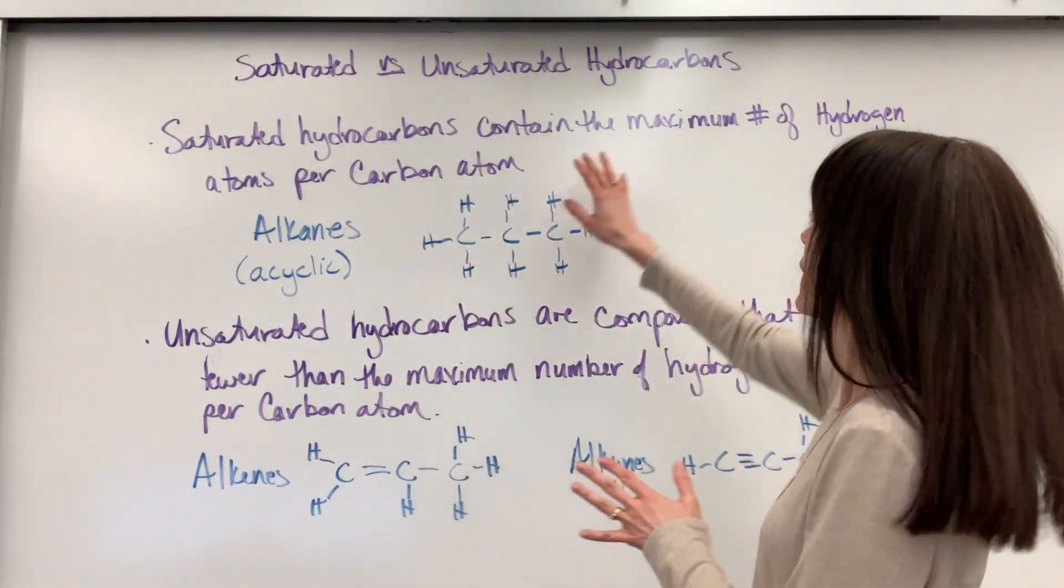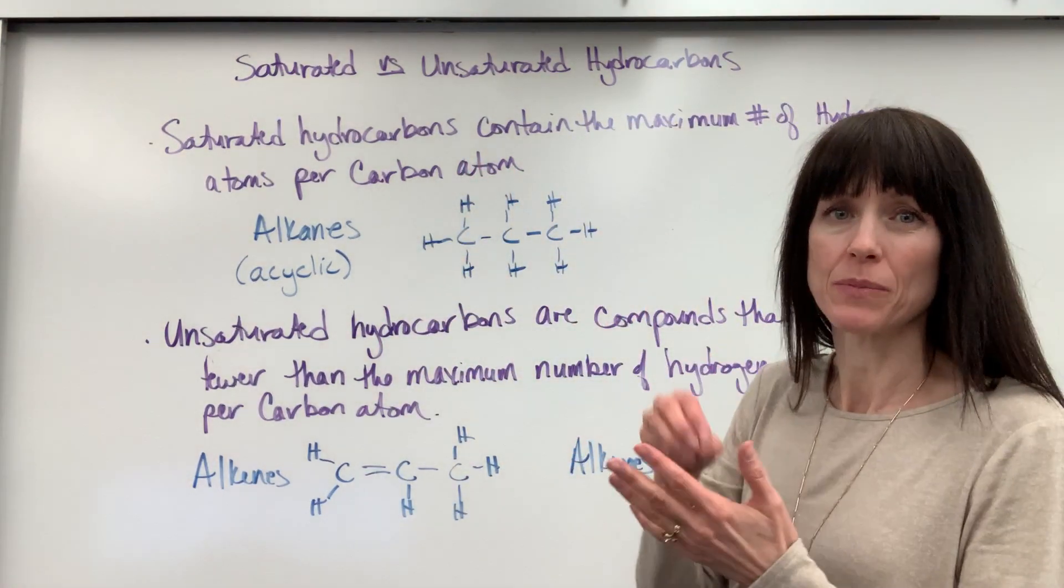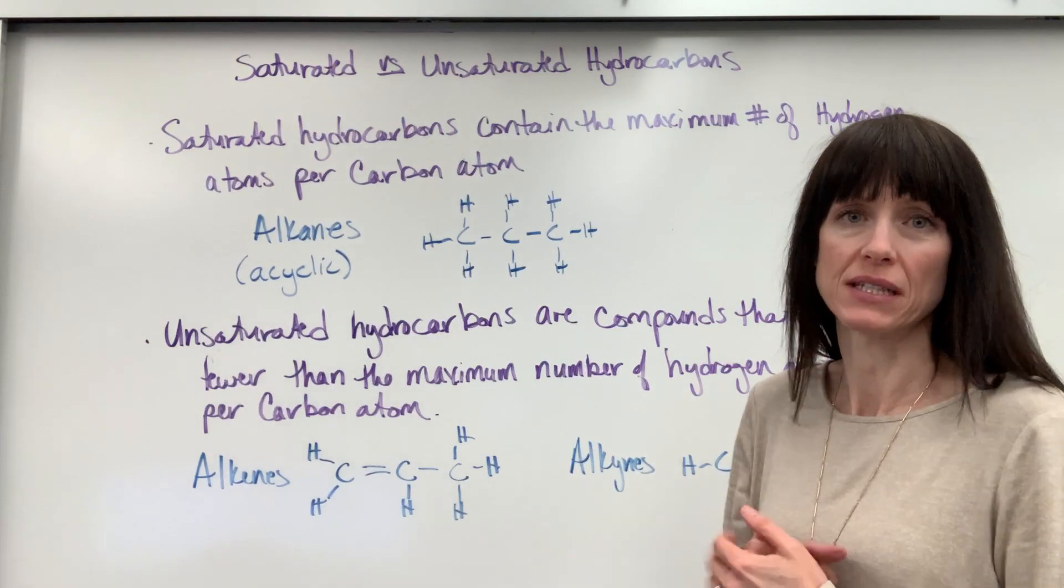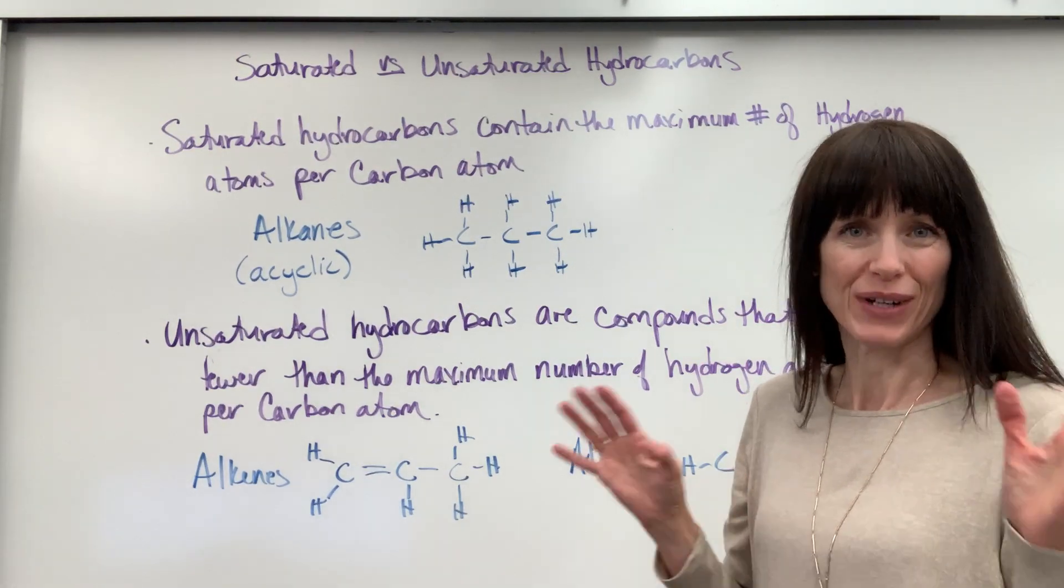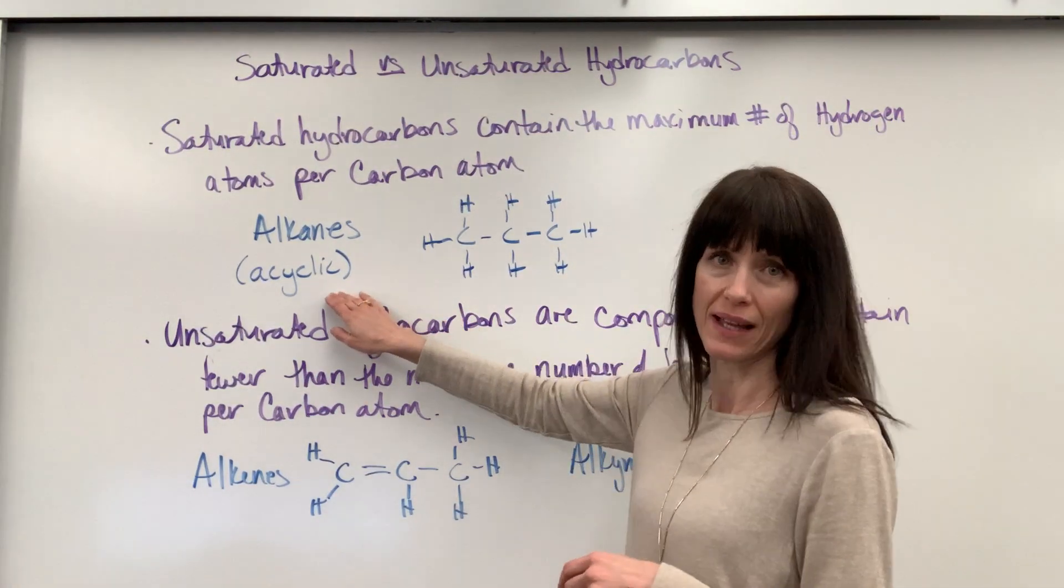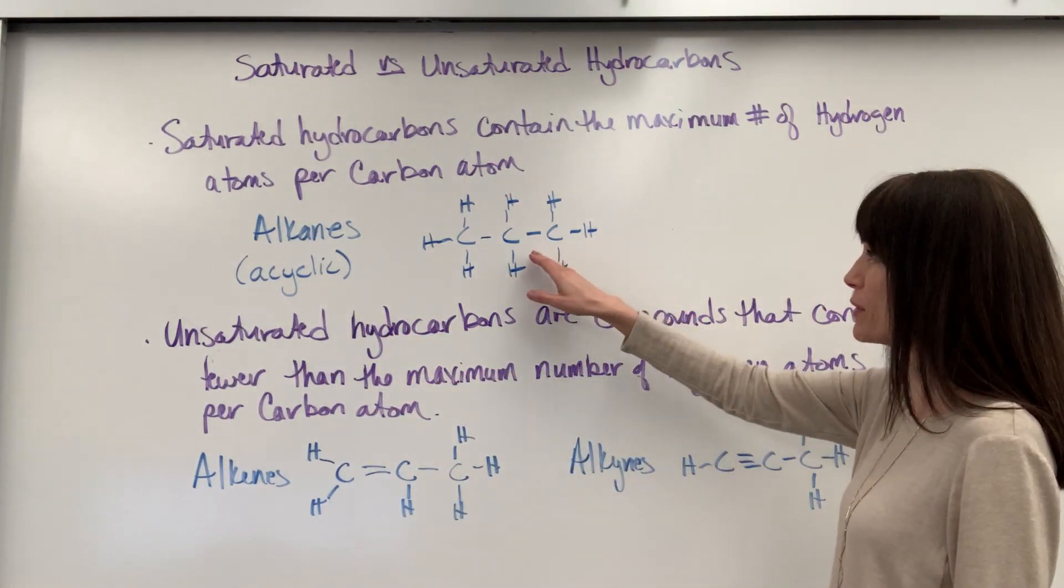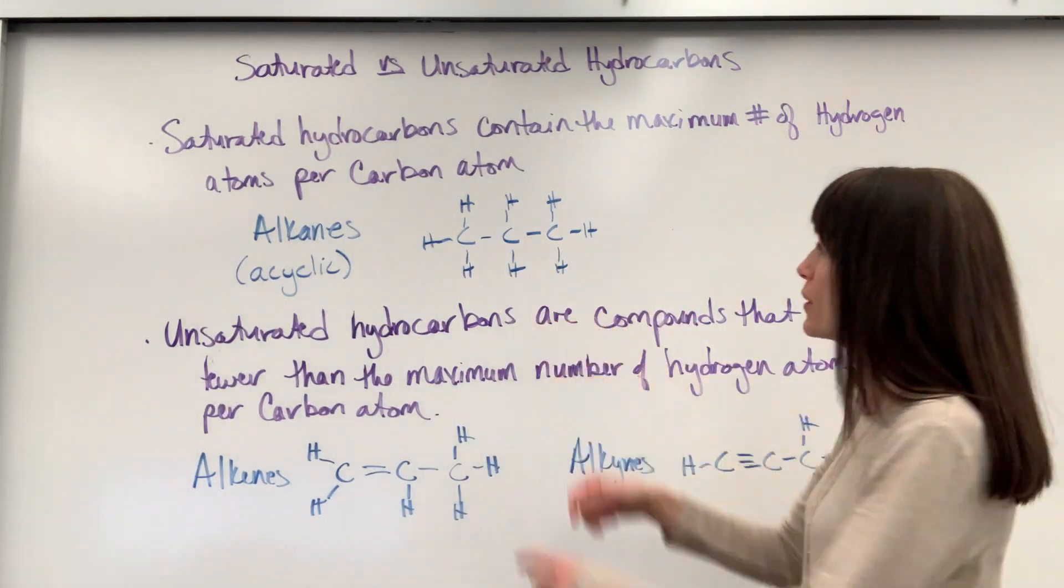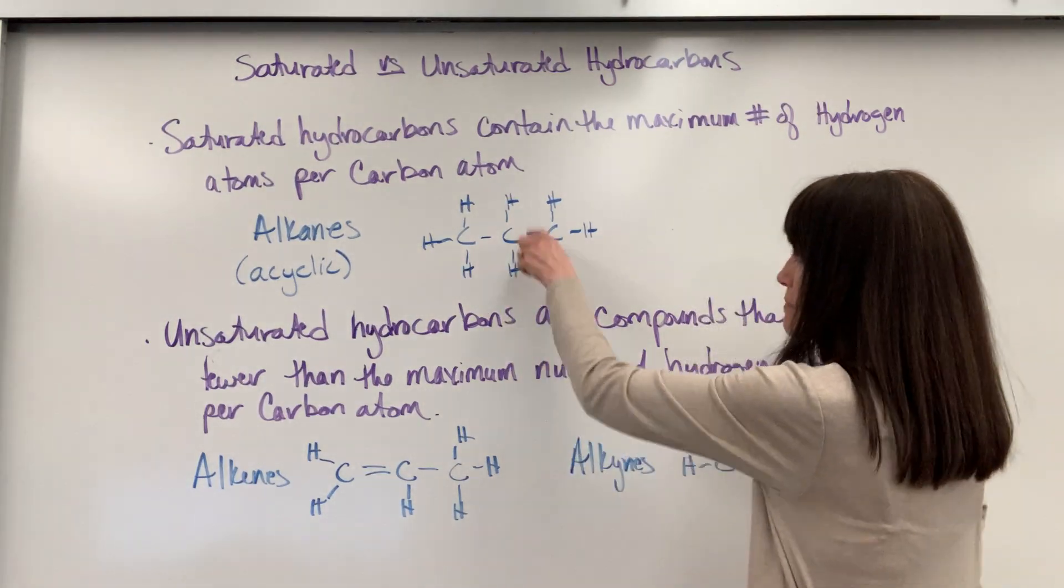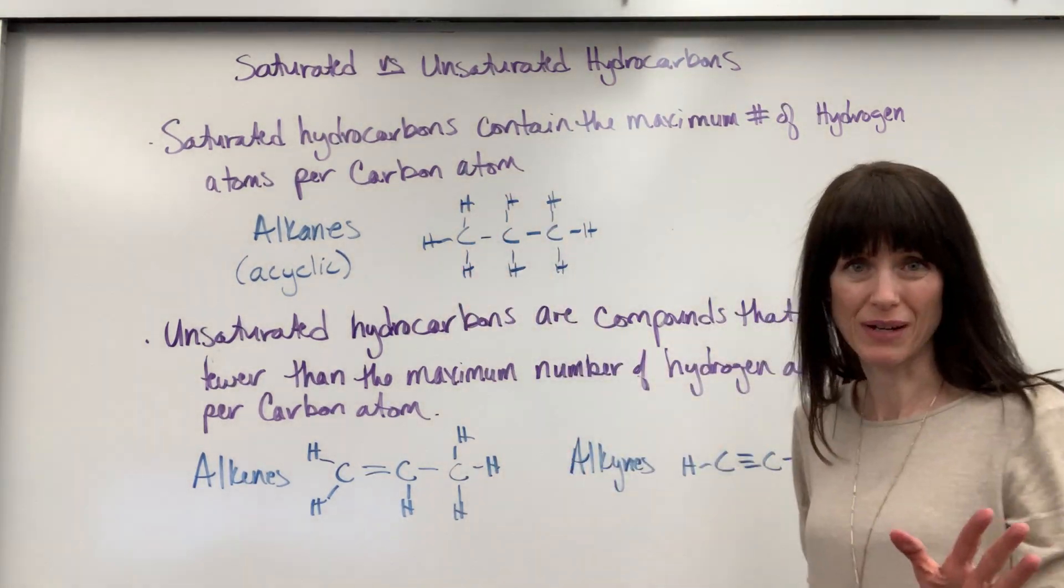Saturated simply means that there's a maximum number of hydrogens around every single carbon. Where you see this? Acyclic alkanes, so our straight chain alkanes. And here's an example for you. Here's propane. Notice every carbon has the maximum number of hydrogens around it.